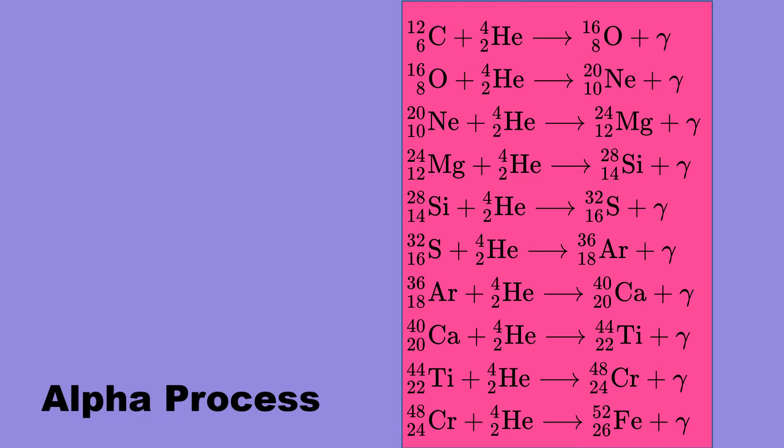Combinations go on in order. We have carbon plus helium produces oxygen. Oxygen plus helium produces neon, so on and so forth. Up to chromium plus helium produces iron.